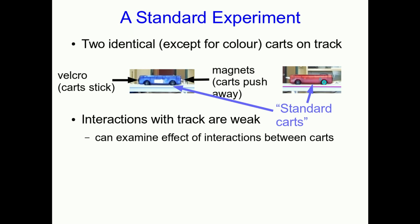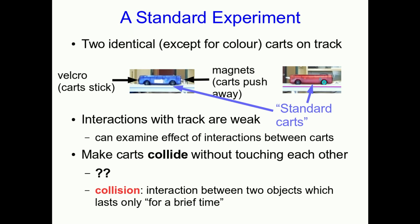And we can have the carts interact with each other in a number of ways. On one end each of these carts has velcro so we can make carts bump into each other and stick to each other. On the other end they have magnets but they're oriented not so that the carts stick together magnetically but so that they push each other apart magnetically. And so now what we can do is we can make the carts collide without touching each other using the magnetic ends. Now you may think that sounds like a contradiction in terms. What the heck do you mean, Jeff? Collide without touching each other? Doesn't the word collision imply that they touch each other? Well, physicists use the word collision a little differently from everyday people. What a physicist means when they say collision is an interaction between two objects which lasts only for a brief time.